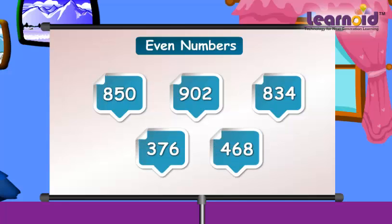Let's check. The last digit in these numbers is 0, 2, 4, 6, 8 — so these numbers are even.